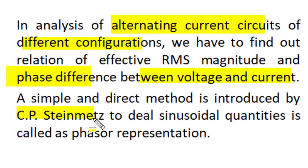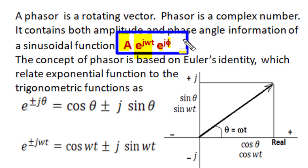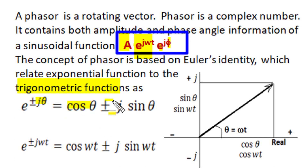A phasor is a complex number representation of a rotating vector. The symbol e^(jωt) represents the rotating nature of the phasor vector, and it includes both amplitude and phase angle information for instantaneous magnitude. The concept of phasor is based on Euler's identity, which relates the exponential function to trigonometric functions: e^(+jθ) = cos θ + j sin θ, and e^(−jθ) = cos θ − j sin θ.